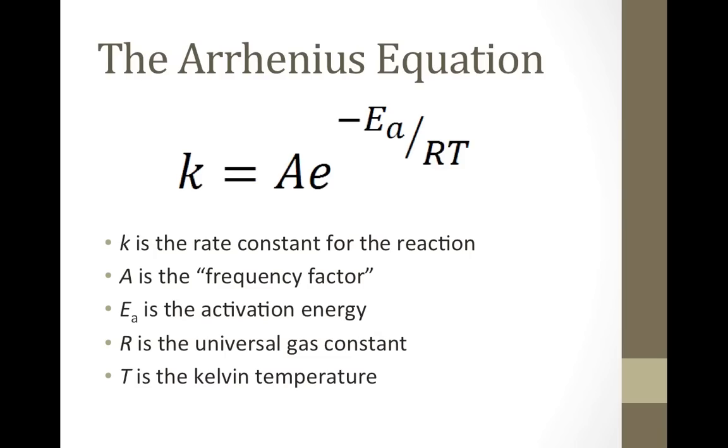The Arrhenius equation, shown here, is the exponential relationship governing the value of the rate constant k for a chemical reaction. In this equation, A is the frequency factor, a value that varies from reaction to reaction. Ea is the activation energy, R is the gas constant, and T is the Kelvin temperature. This version is useful for calculating k when all the other variables are known.